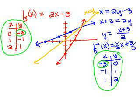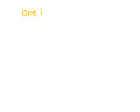In order for a function to have an inverse, it has to be a one-to-one function. A one-to-one function means that for every x you have one y, and also for every y you have one x. The original function has to be one-to-one in order for it to have an inverse, because the inverse also has to be a function.